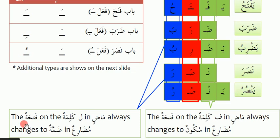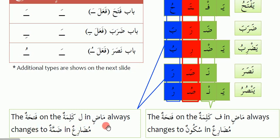Now remember: the Fath on the Lam Kalma in Madi always changes to Dhamma in Muzara — this is a very important rule. I added this slide specifically for this. So wherever you see Fath on the Lam Kalma in Madi, it becomes Dhamma in Muzara — everywhere: Dhamma, Dhamma, Dhamma.